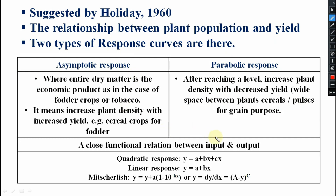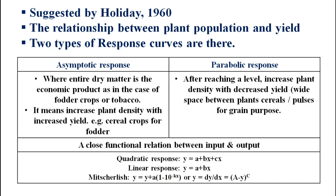A close functional relation between input and output will be there. The quadratic response is: Y = A + BX + CX². The linear response is: Y = A + BX. And the Mitscherlich equation is: Y = Y_max × (1 − 10^(−KX)), or expressed as a derivative: dY/dX = A − (Y_max − Y)^C. If you want more detail on these relationships, please put it in the comment box and we can make a separate video.